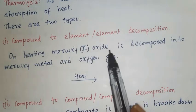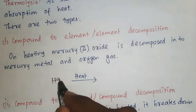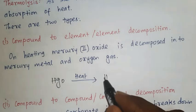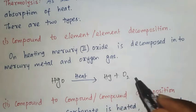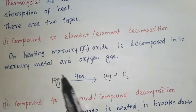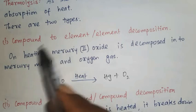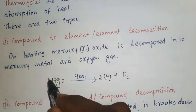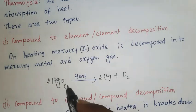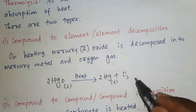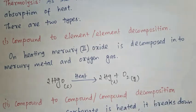On heating mercury(II) oxide, HgO, mercury(II) oxide decomposes — a compound decomposes into elements. For balancing this equation, place 2 on each side. Mercury(II) oxide is in the solid state, mercury is in the liquid state, and oxygen is in the gaseous state.